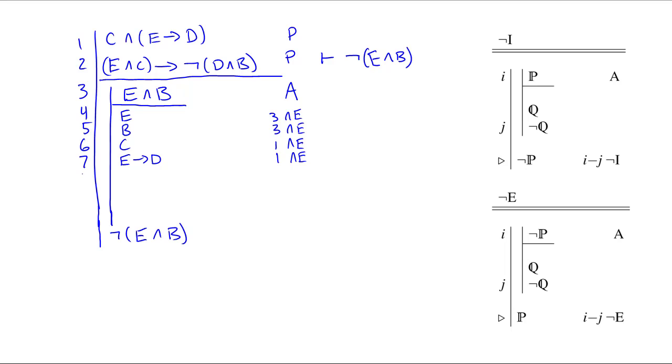Next, perhaps, we can use lines 4 and 7 to get D from arrow elimination. If we combine lines 4 and 6, we get E and C. That is an AND introduction or conjunction introduction. It looks to me like maybe we need a little more space here, so let's make it for ourselves.